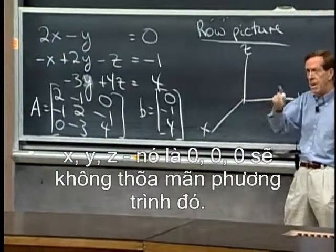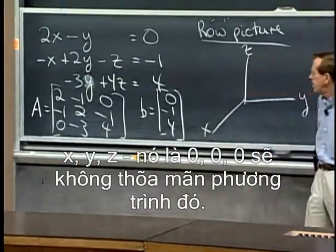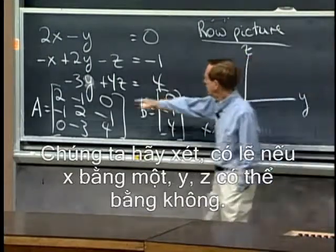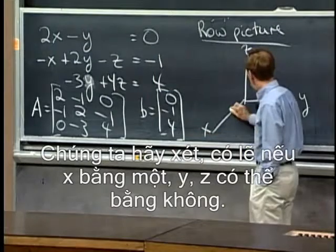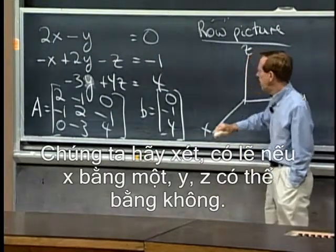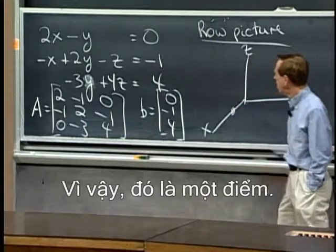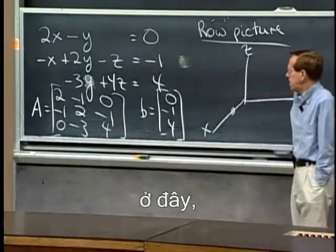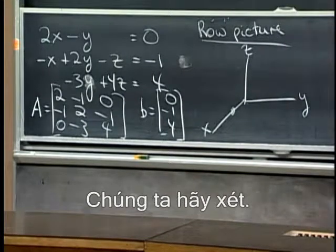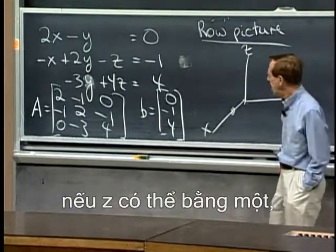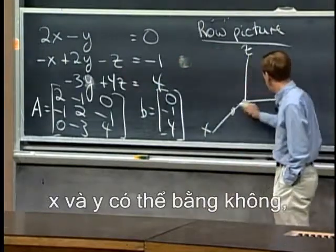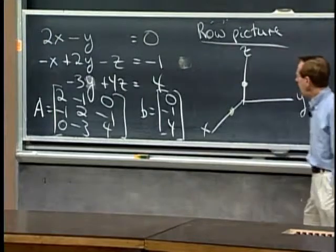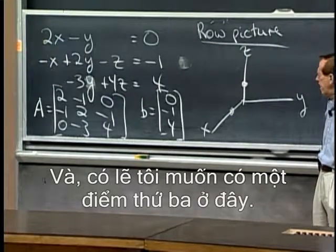x, y, z being 0, 0, 0 would not solve that equation. So what are some points that do solve the equation? Let's see, maybe if x is 1, y and z could be 0. That would work, right? So there's one point. I'm looking at this second equation here just to start with. Let's see, also I guess if z, z could be 1, x and y could be 0, so that would just go straight up that axis.